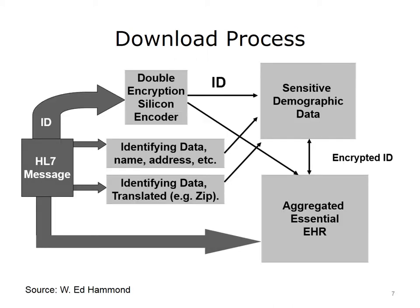Looking more closely at the data flow within an HIE, this figure illustrates data coming into the aggregated EHR using an HL7 message, which should be encrypted. As the message is processed, the identifying data is stripped out and stored in more secure, sensitive storage. The key to correct aggregation of data into the correct patient EHR is a unique global person identifier, which unfortunately does not exist in the U.S. at present. Instead, demographic data elements are used in an algorithm to guess the patient's ID, with an error rate likely around 10% or higher. For real security, the external identifier is encrypted in a double-encryption algorithm that cannot be reversed and stored in silicon to make it inaccessible to hackers.